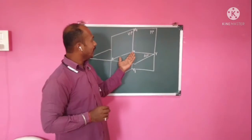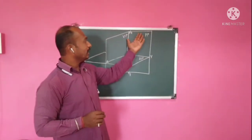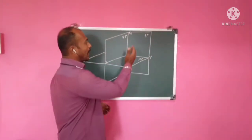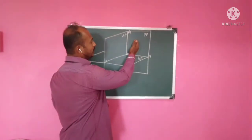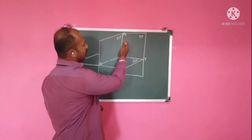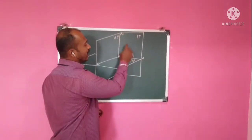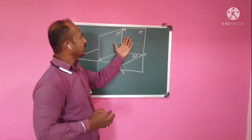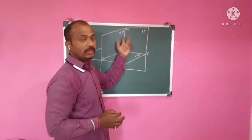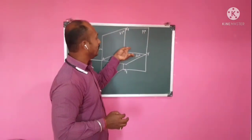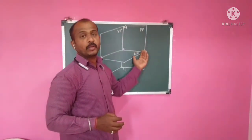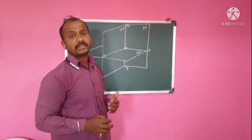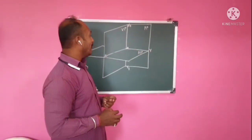The third plane is the PP — the profile plane. The profile plane is the plane which is perpendicular to VP as well as the HP. This plane is known as PP, that is the profile plane.